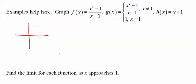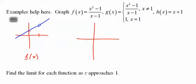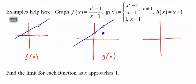Examples really help here. Grab this on your calculator, and you will find that you get a straight line going through 1 with a hole at 1. Graph the second one. This is f of x. You're going to find the same thing, except we defined a dot there. This is g of x. And this one is just a straight line. Nothing's changed. So you have three situations here.